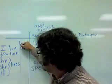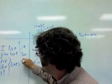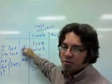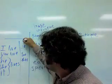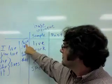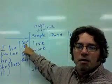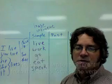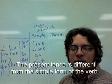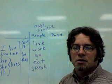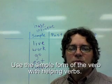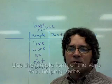And for the plural: we, you, they — and you use the word 'live' for the plural. So this form is different from the simple form. The present tense is different from the simple form of the verb. Use the simple form of the verb with helping verbs.